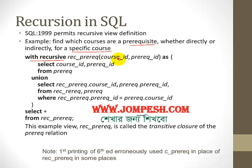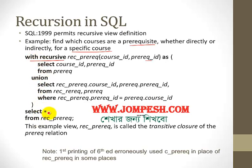The recursive view is defined as: with recursive prerequisite_course_id as (select course_id from prerequisite union select prerequisite.course_id from prerequisite table where prerequisite.prerequisite_id equals prerequisite_course_id). Then select star from the defined recursive prerequisite — this runs automatically and recursively.